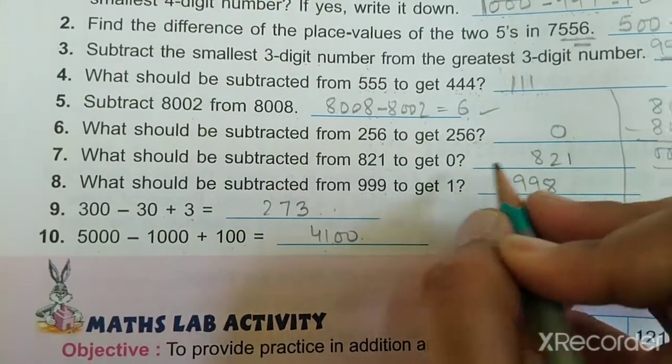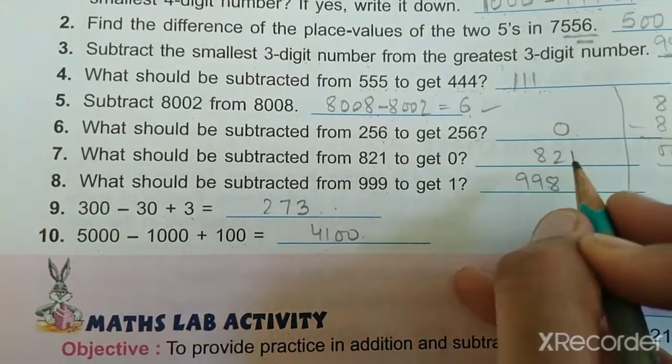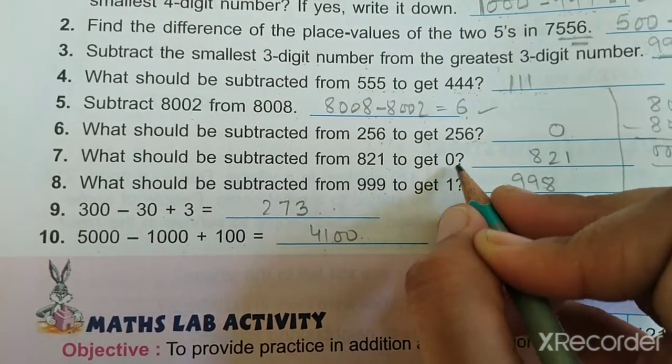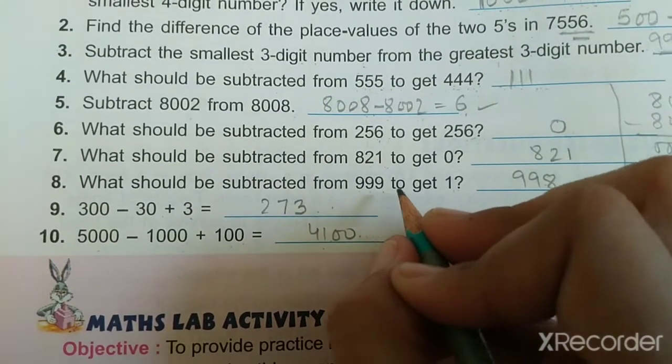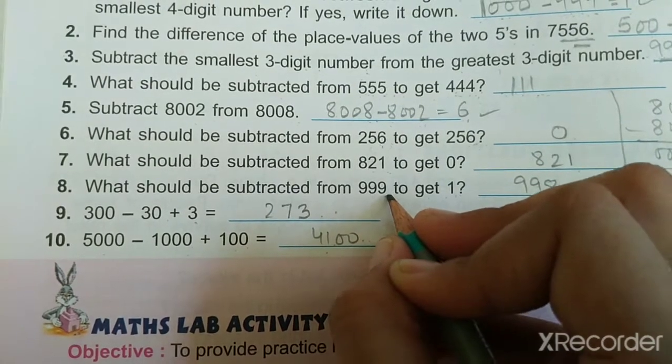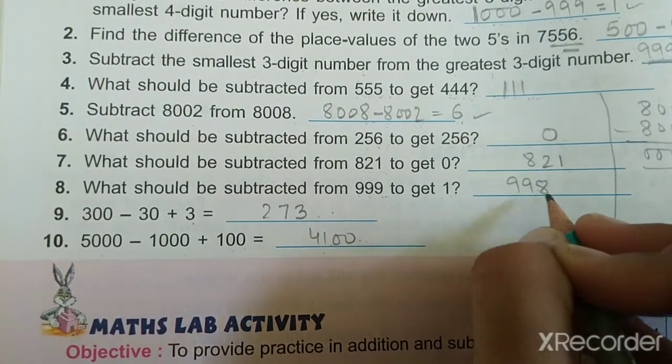What should be subtracted from 821 to get 0? Clearly if 821 minus 821, then we will have 0. So 821 is the answer. What should be subtracted from 999 to get 1? 999 minus 998, so 998 is the answer.